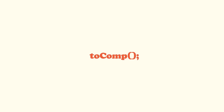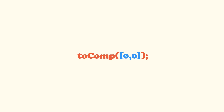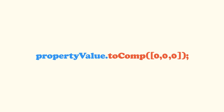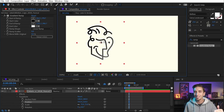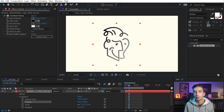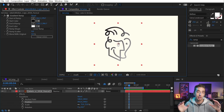All right, now how do we use the expression toComp? You start by writing out toComp with a capital C and then two parentheses. In between those parentheses, we're going to put an argument — either an array that holds a position value, either two dimensions or three dimensions. What this expression is going to return is basically the distance between what we're applying the expression to and what we're targeting within that argument.